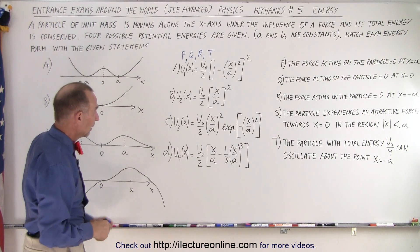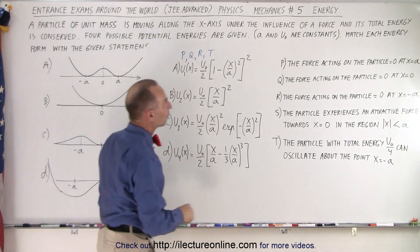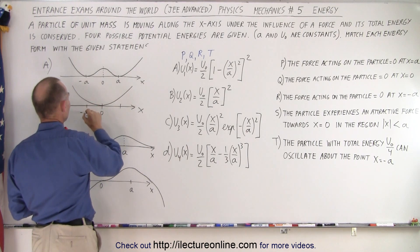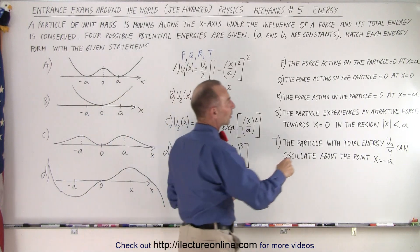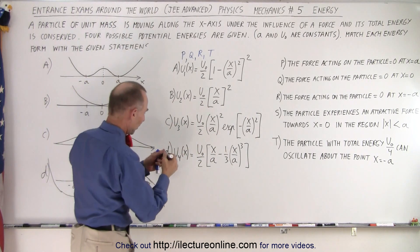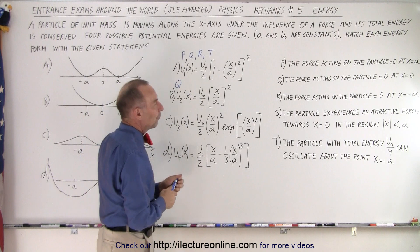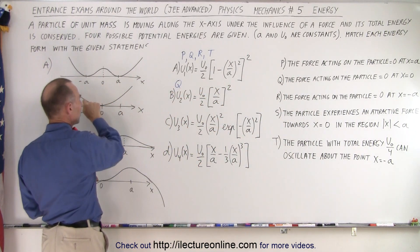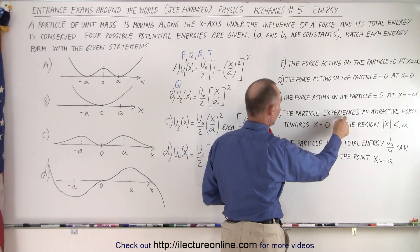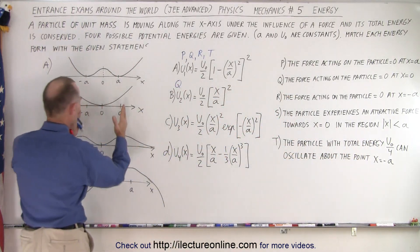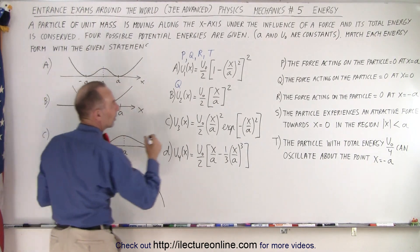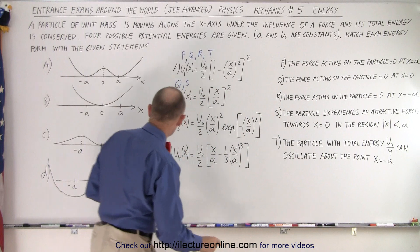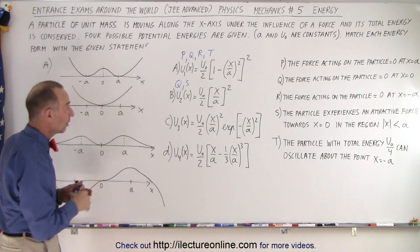For the second equation: Statement P — force equals zero at x equals a — is not the case, since x equals a is not a trough. Statement Q — force equals zero at x equals zero — is correct, as that's the lowest potential energy point. Statement R — force equals zero at x equals negative a — is also not the case. Statement S — attractive force towards x equals zero for x less than a — is correct, since the force acts toward the origin in both directions. Statement T — oscillate about negative a — is not possible since there's no trough there. Equation B: Q and S.